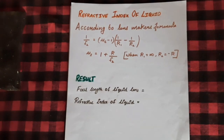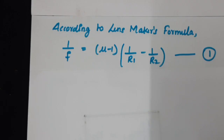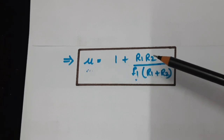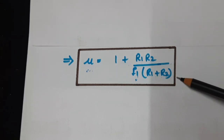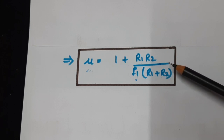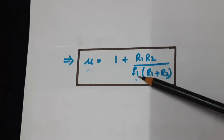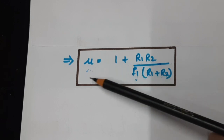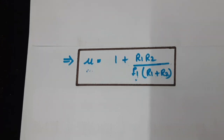As an extension to this experiment, it is possible to find the refractive index of the material of the lens. According to the lens maker's formula, 1/F = (μ − 1)(1/R1 − 1/R2). Rearranging, μ = 1 + R1·R2 / [F1·(R1 + R2)]. The radii of curvature R1 and R2 can be found by the Boys' method applied to both surfaces of the lens. F1 is the focal length of the convex lens found in the first stage, allowing evaluation of the refractive index of the lens material.